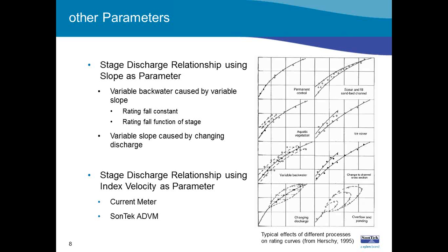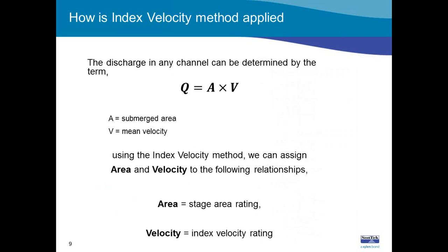Another method of resolving complex flow conditions is using the index velocity as a parameter. You can use current meter results or Sontech ADVMs — the SL series or IQ series, whether side-looking or up-looking instrumentation. The discharge in any channel can be calculated from the cross-sectional area perpendicular to the flow and the mean velocity. Using the index velocity method, area is assigned to a stage-area rating, and velocity is assigned to an index velocity rating to achieve the same results.